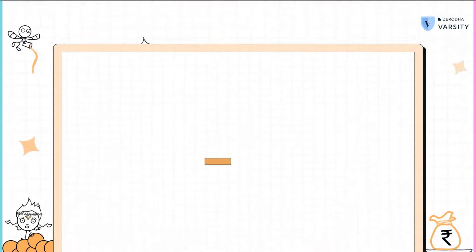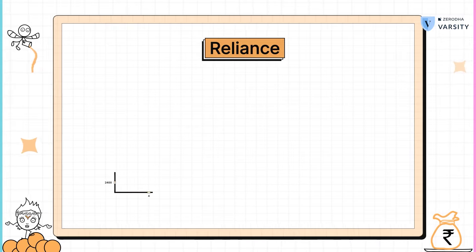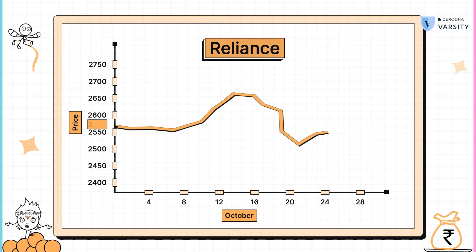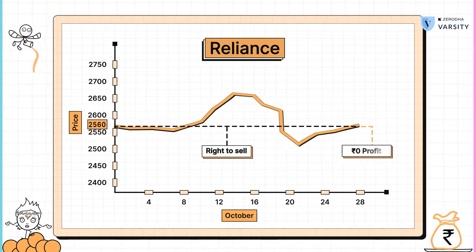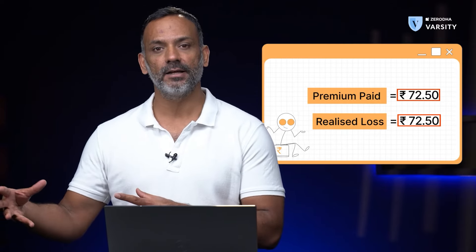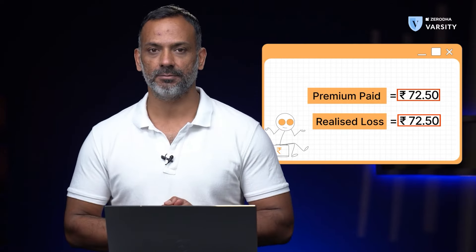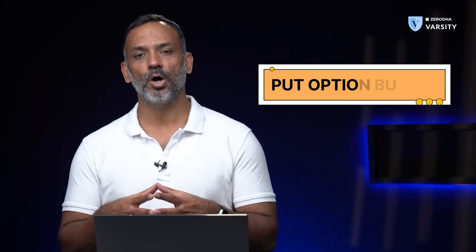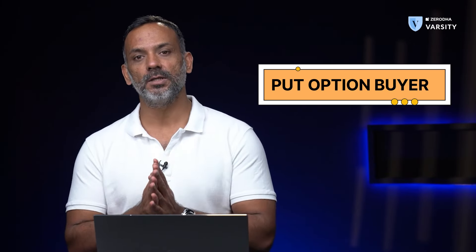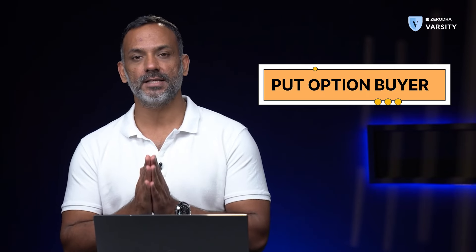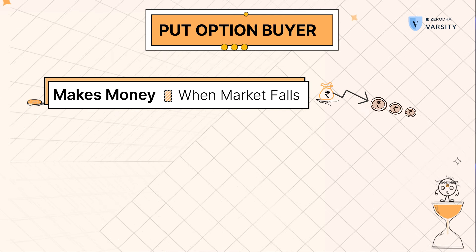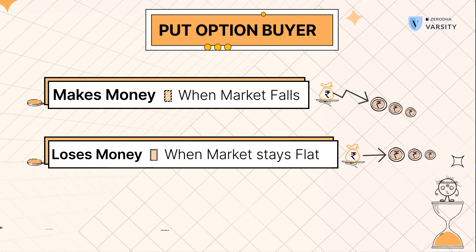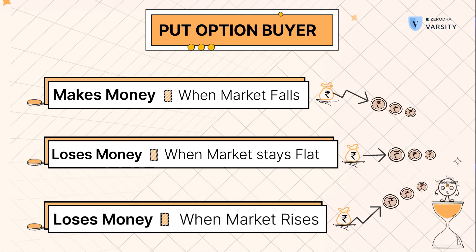Now let's look at the third situation — the stock price of Reliance stays flat at 2560. Obviously, it wouldn't make sense to exercise my right, and therefore I will forfeit the premium that I've paid and walk away from the situation. Hence, as a put option buyer, you would be profitable only if the stock price or the price of the underlying declines from the time you've bought the option. If it stays flat or increases, you will not make money.